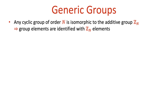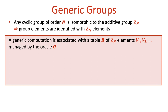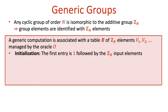Let's go ahead and define the model more formally. A basic observation which underlies the model is that any cyclic group of order n is isomorphic to the additive group Z_n of integers modulo n. Hence, each group element can be identified with a corresponding Z_n element. A generic computation can be associated with a table b of Z_n elements managed by the oracle. This table is initialized with the Z_n elements that correspond to the input elements to the algorithm, and we assume that all algorithms receive the same generator of the group as input.